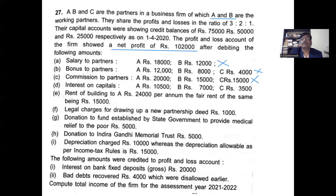Total interest on capital paid to partners is 21,000. Out of this, you deduct allowable interest at 12% of capital. Capital is 1,50,000, so 12% is 18,000 allowable. Therefore 21,000 minus 18,000 — the balance of 3,000 is disallowed.